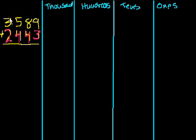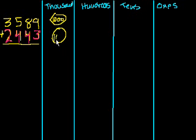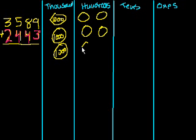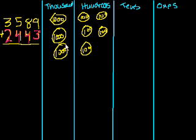So 3,589 — let's do the top one first. We have 3 thousands: 1,000, 2,000, 3,000. Then 5 hundreds: 1, 2, 3, 4, 5. Each of these are $100 — you could view them as $100 poker chips, not that I encourage gambling.